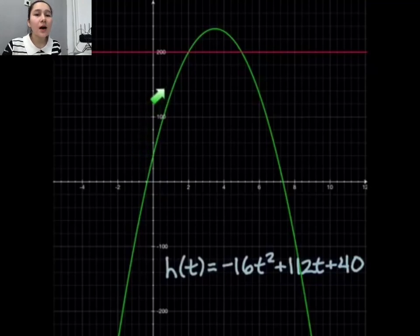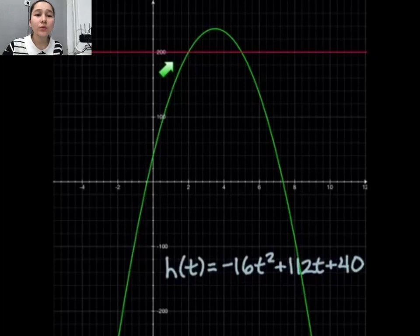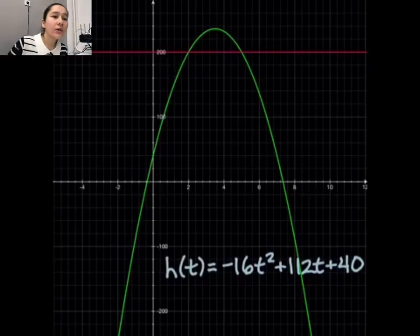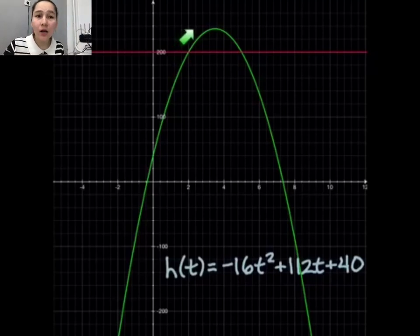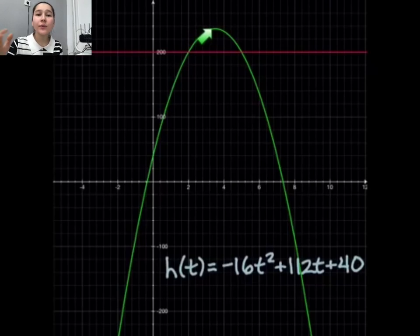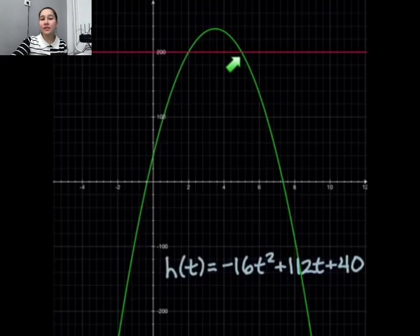So you'll notice the parts of this graph: we're gonna start right here at a height of 40, the y-intercept is our initial value. The ball goes up in the air until it gets to its maximum, its vertex. Here we are looking for the red line here which represents 200 feet. You'll notice the 200 on the y-axis right there.